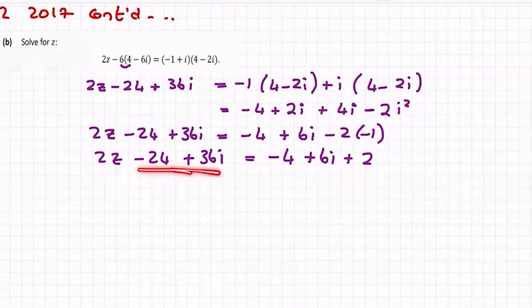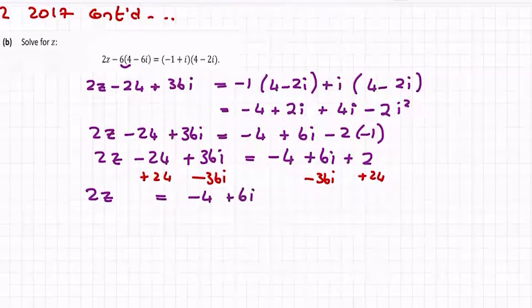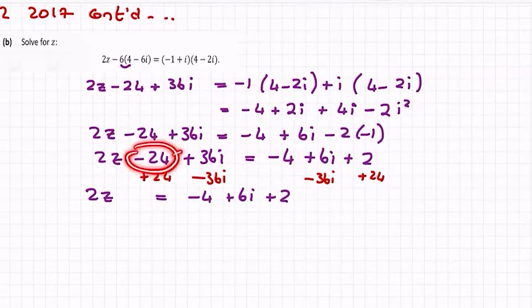We need to solve for z which I see here, so let's bring these two over this side. You're either adding 24 to both sides, subtracting 36 from both sides if you want to write it down that way. But either way you're going to end up with 2z being equal to minus 4 plus 6i plus 2. Or of course just bring over the minus 4 and it becomes plus 24, and bring over the plus 36 and it becomes minus 36i.